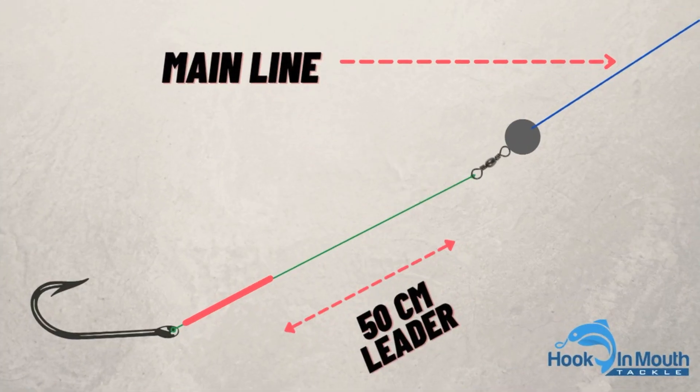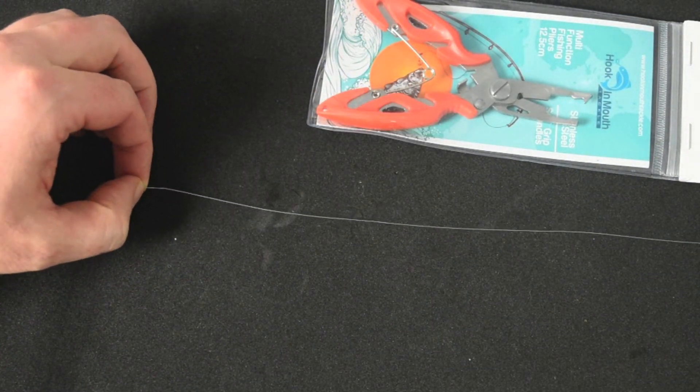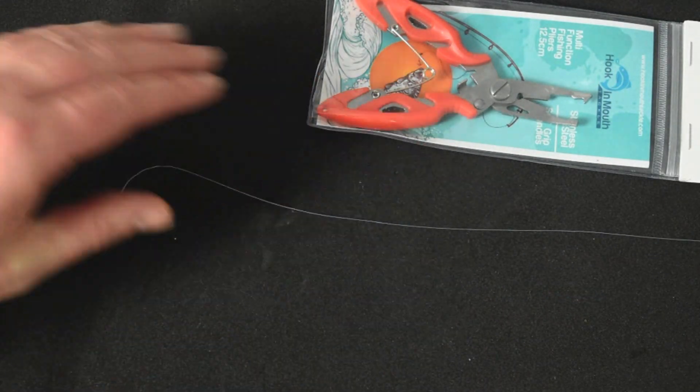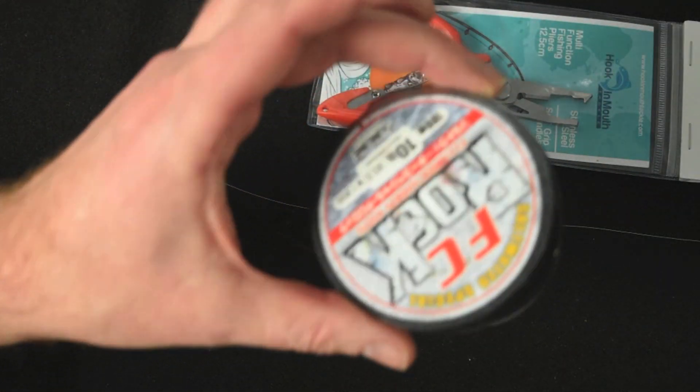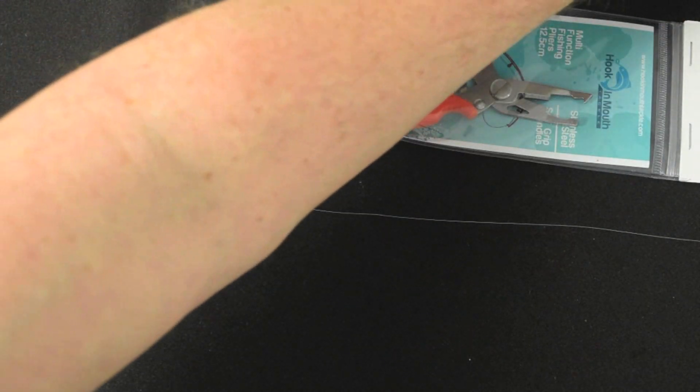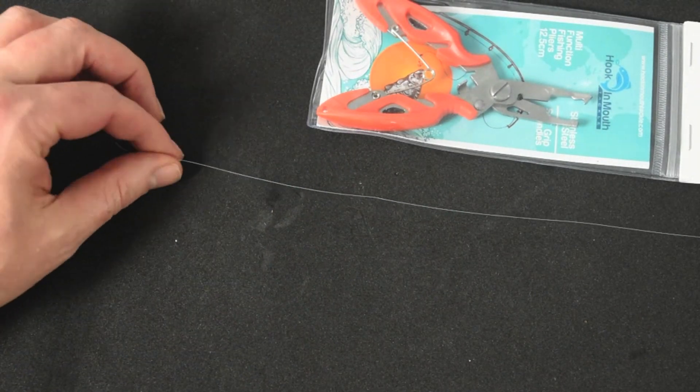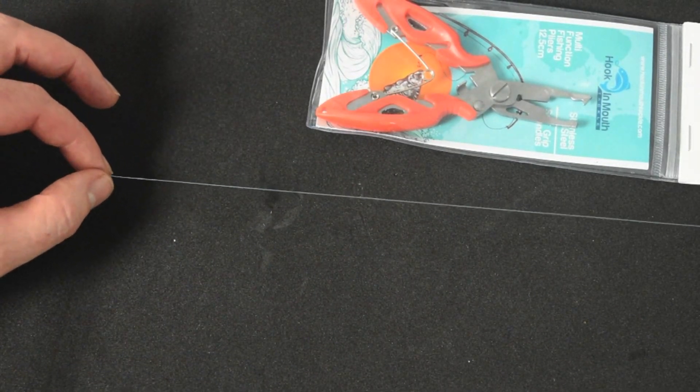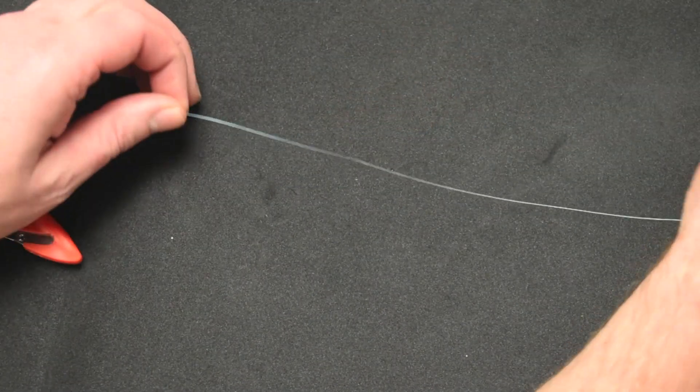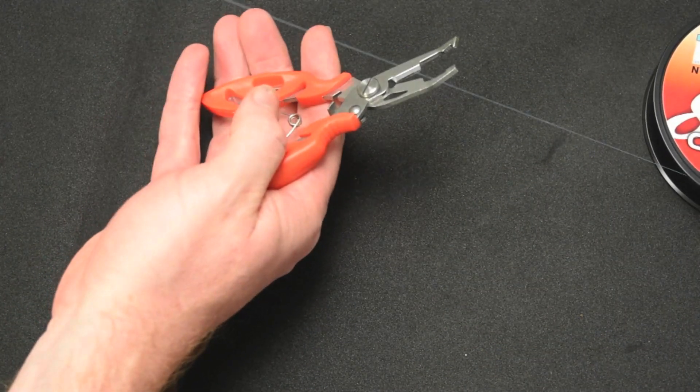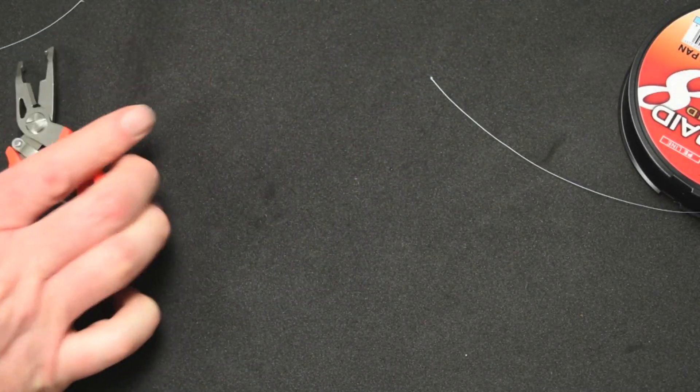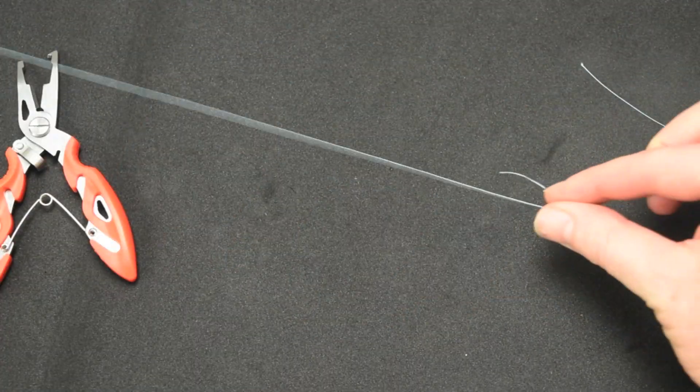I like to make my running sinker rig with about a 50cm fluorocarbon leader and about a 2cm piece of red tube. I'm also going to use this braid. It's a little thin it's eight pound braid but it's blue and we're hoping that you can see that better than using the fluorocarbon leader but obviously we would normally use the fluorocarbon leader because it's invisible in the water to the fish where the braid obviously isn't.